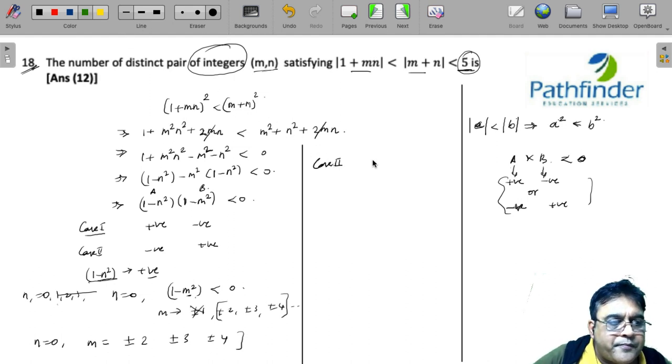Let us consider case 2. We have 1-n² is negative and 1-m² is positive. By similar reasoning, m must be 0 and the only possible values of n that will satisfy are ±2, ±3, and ±4.